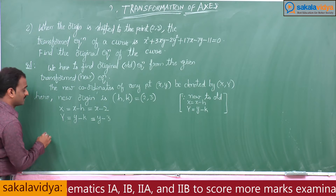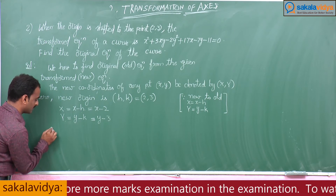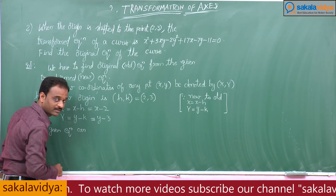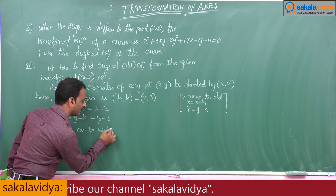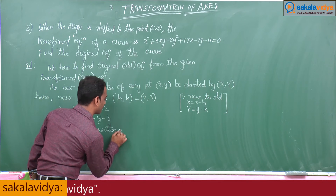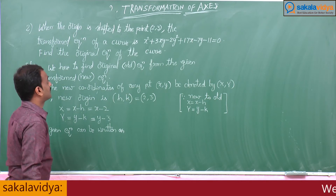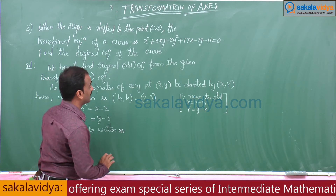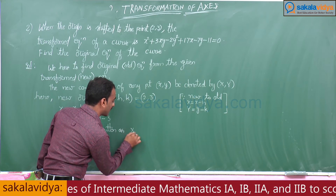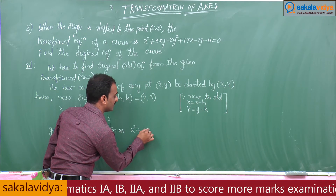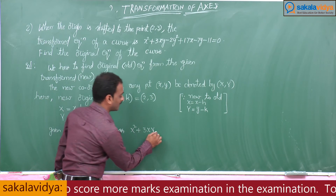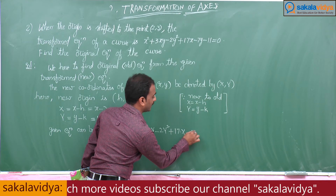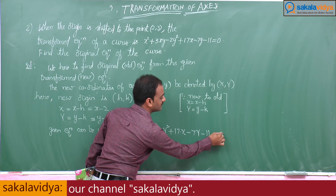Now, the transformed equation of the curve must be written in terms of capital X and capital Y. That is: X² + 3XY − 2Y² + 17X − 7Y − 11 = 0. Let this be equation number 1.